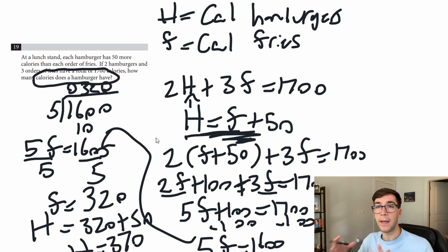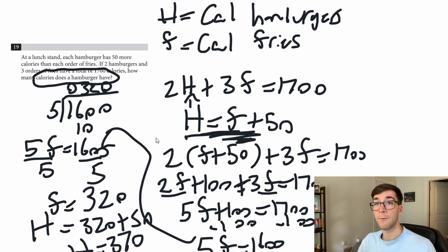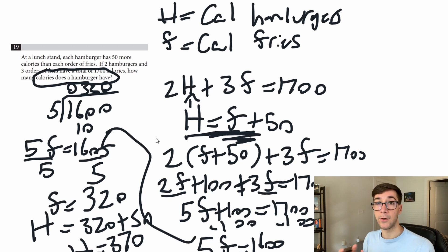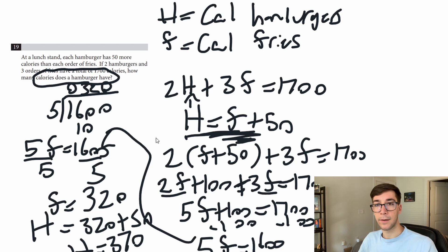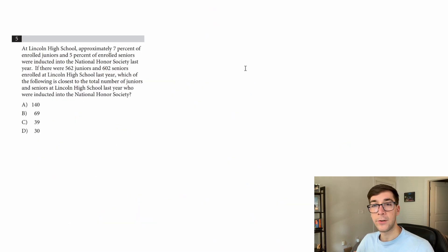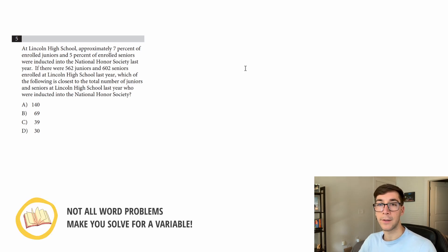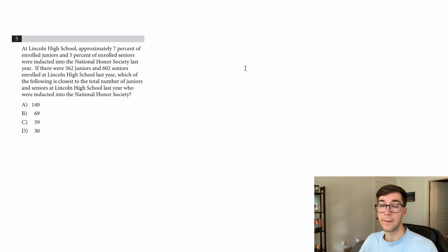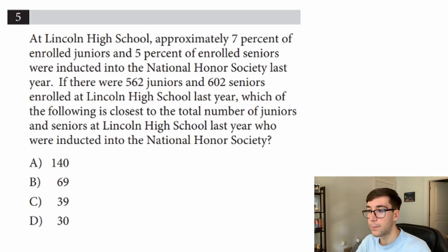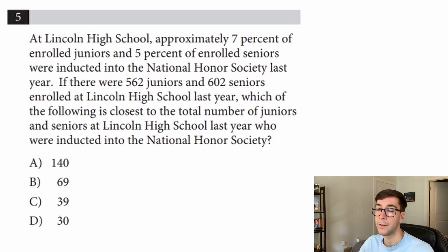Same cadence for this problem: write the variables, write the equations — including the third type, the comparison, where you set them equal then balance according to the problem — then solve. Let's look at another problem. This one gives you all the information and you just fill it in. Let's read it: at Lincoln High School, approximately 7% of enrolled juniors and 5% of enrolled seniors were inducted into the National Honor Society last year.